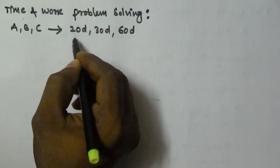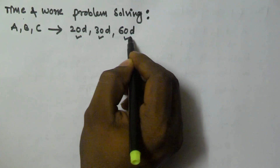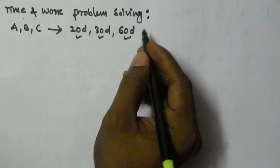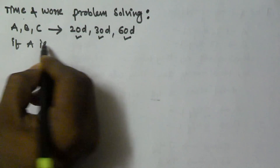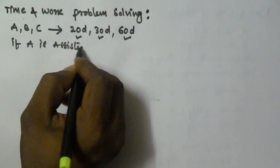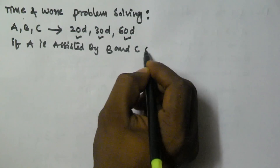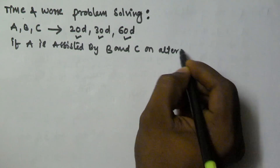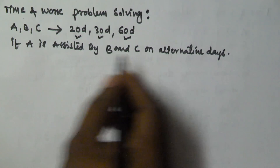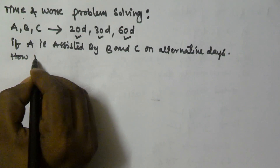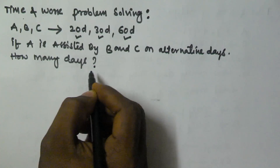A finishes the work in 20 days, B finishes the same task in 30 days, and C finishes the same task in 60 days. If A is assisted by B and C on alternative days, how many days are they going to take to finish the task?